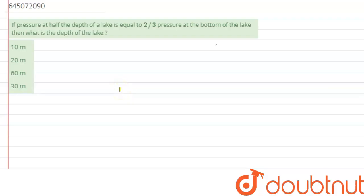We are given the question which says: if pressure at half the depth of a lake is two-thirds of the pressure at the bottom of the lake, then what is the depth of the lake? We need to calculate the depth of the lake by using the condition that has been given.